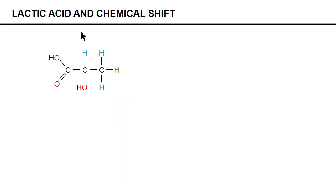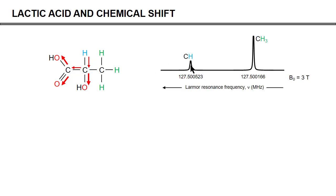Let's look at lactic acid, one of the molecules typically observed in vivo. Lactic acid has a single proton and three protons in a methyl group, plus oxygen groups. Oxygen is an electronegative atom that draws electron density towards itself, so electron density around the single proton is low, the magnetic field at that nucleus is high, and therefore its Larmor frequency is high, giving a resonance at a high frequency. The three methyl group protons are much farther from the oxygens, have better electronic shielding, a lower field at the nucleus, and therefore a lower resonance frequency. Lactate therefore always has two peaks: one at high frequency and one at low frequency.